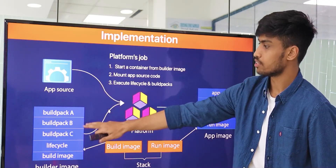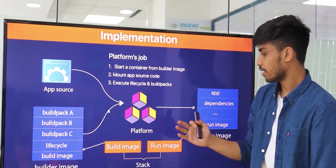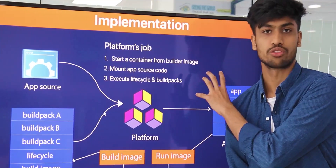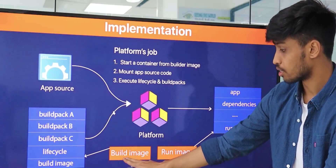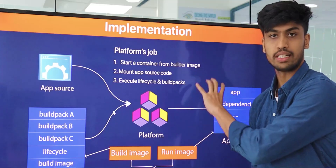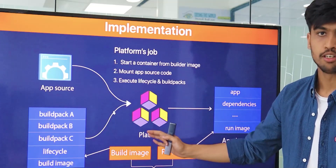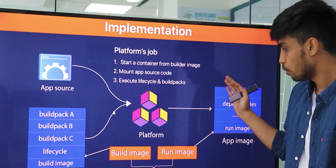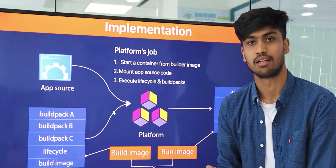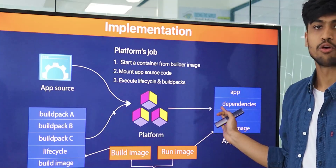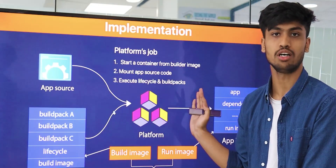These two things go into the platform stage and merge. The platforms then move into the OCI image. Between the platform stage, these two things merge into the build and run image, which is also called a stack. After going through the platform stage, it goes directly to the OCI image. This OCI image is treated as a Docker image, which is then started as a container, setting up your whole application in the container stage.